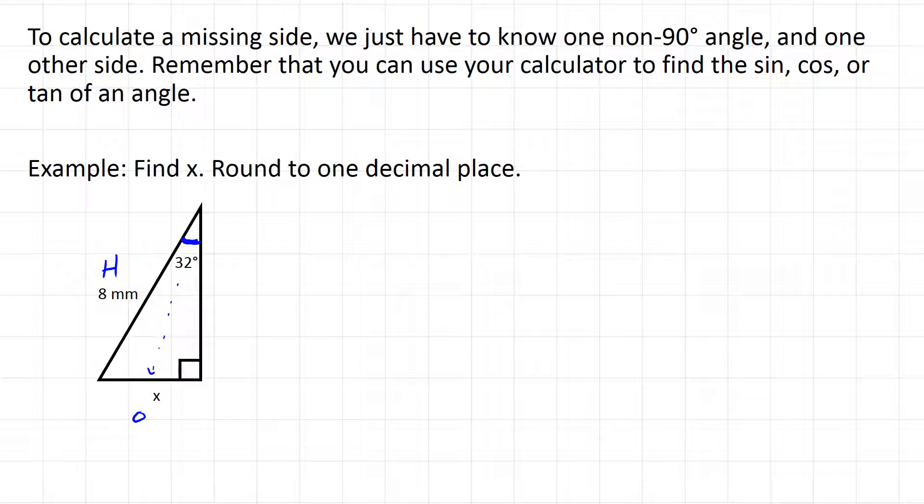Now we have to pick one of those three trig ratios, sine, cosine, or tan, that will help us solve this. So in order to do that, if it helps, just write out SOHCAHTOA at the top of your page, and look for the one that has opposite and hypotenuse in it, that will be sine.